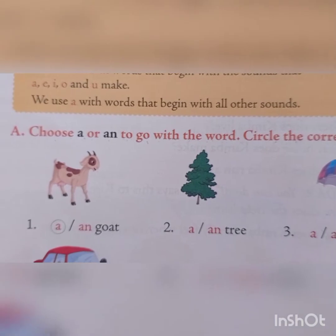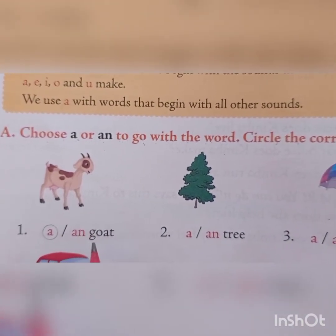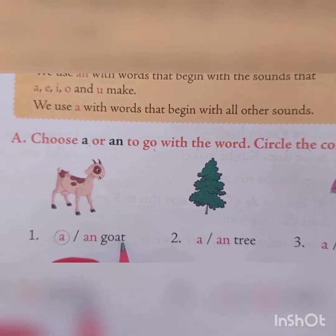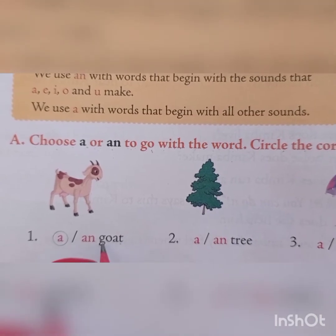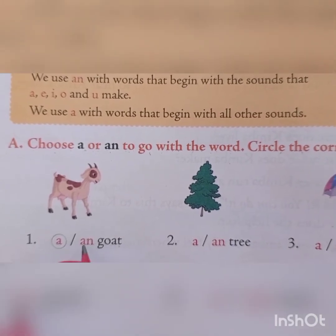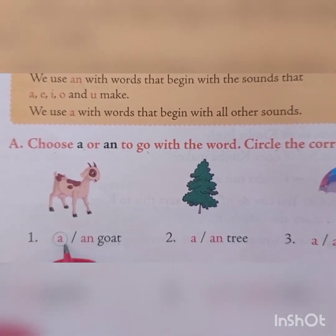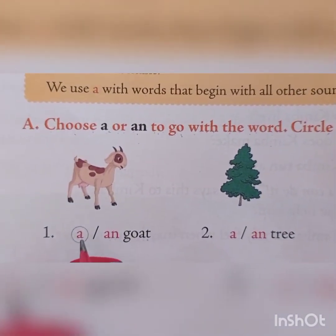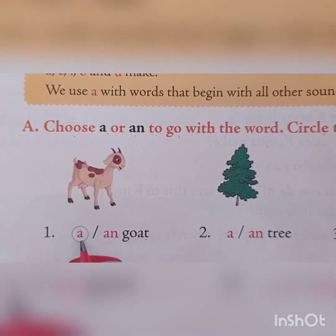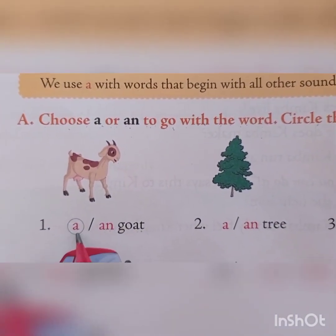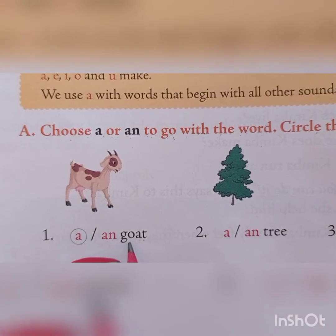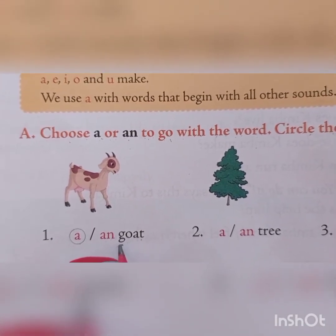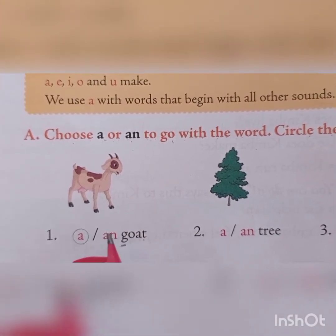Our first picture is a goat. A or AN? One example is for you — 'A goat.' G is a consonant, so we use 'a.' Clear?